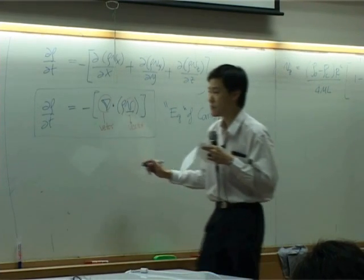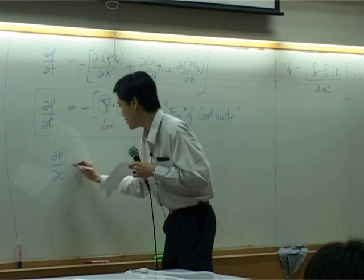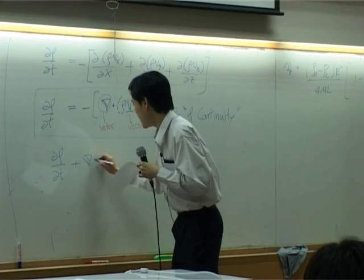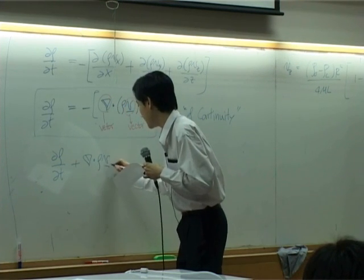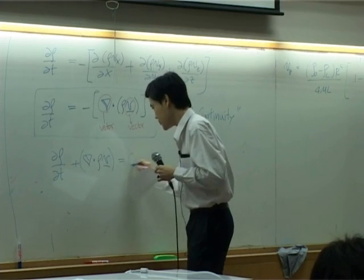Or sometimes people write it down like this: d rho by dt plus del dot rho v equal to zero.